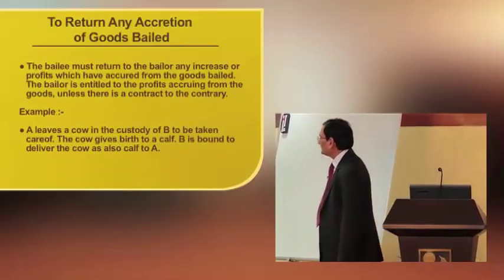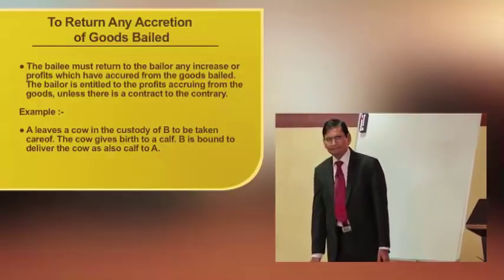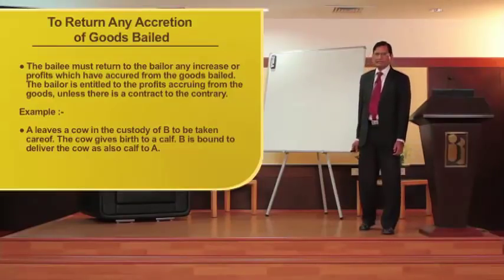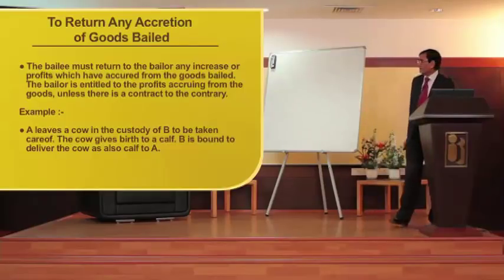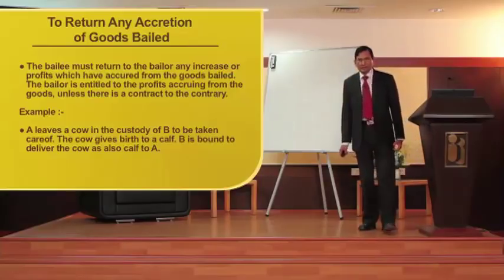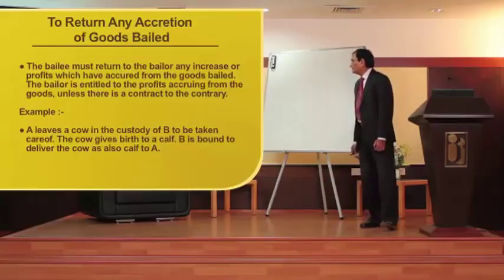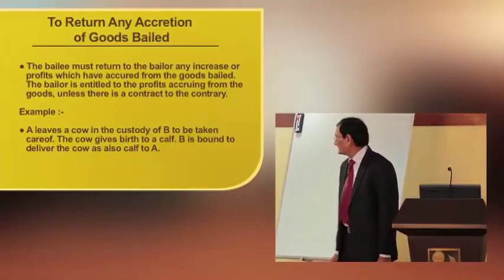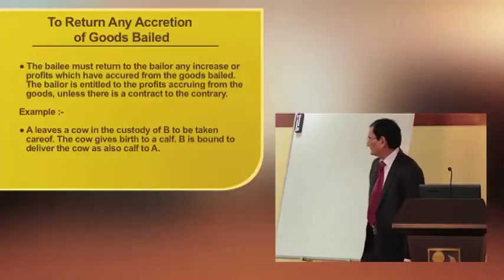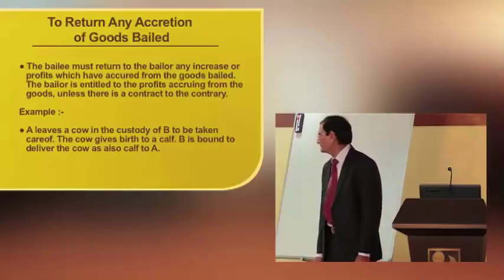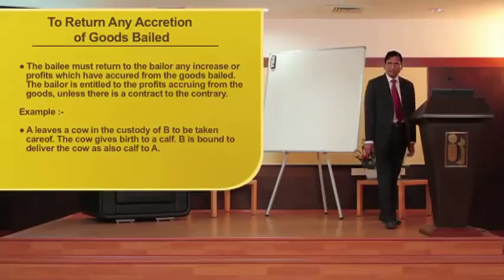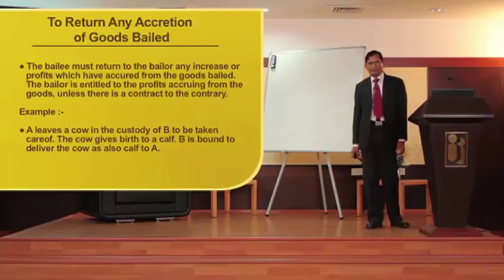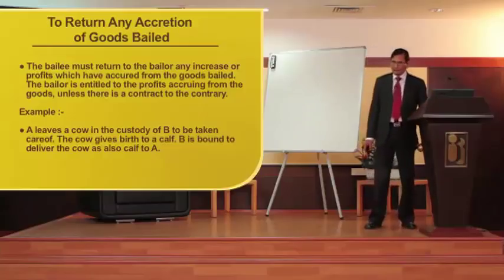The fifth duty of the bailee is to return any accretion of goods bailed. The goods bailed by the bailor, and during the bailment period if there is any accretion to the goods, the bailor is entitled to receive back the goods along with the accretion. For example, suppose A leaves a cow in the custody of B to be taken care of. In the meantime, the cow gives birth to a calf. B is bound to return the cow as well as the calf to A. He cannot hold the calf; he has to hand over the cow with the calf.